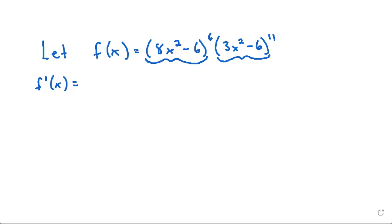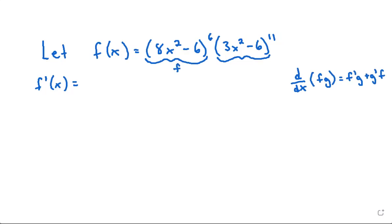The product rule says that the derivative of f times g equals the derivative of the first times the second, plus the derivative of the second times the first. So let's identify the first as f and the second as g.